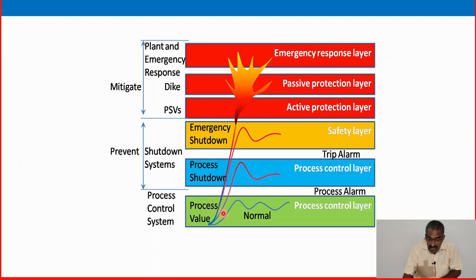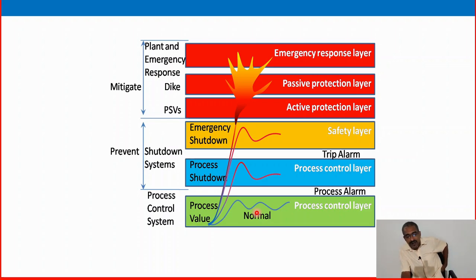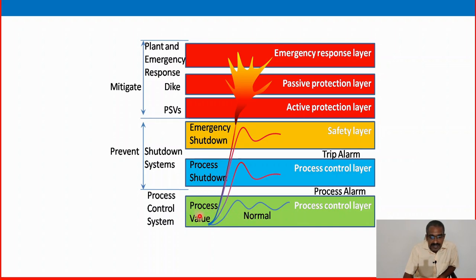The desalter is working, so the process value is at normal level. The process control system is there. In previous videos, we already discussed about level control system, pressure control system, temperature control system, level transmitter, level sensor, level control loop, etc. The process is being controlled in this area by a process control layer, using the set point — the normal operating value.